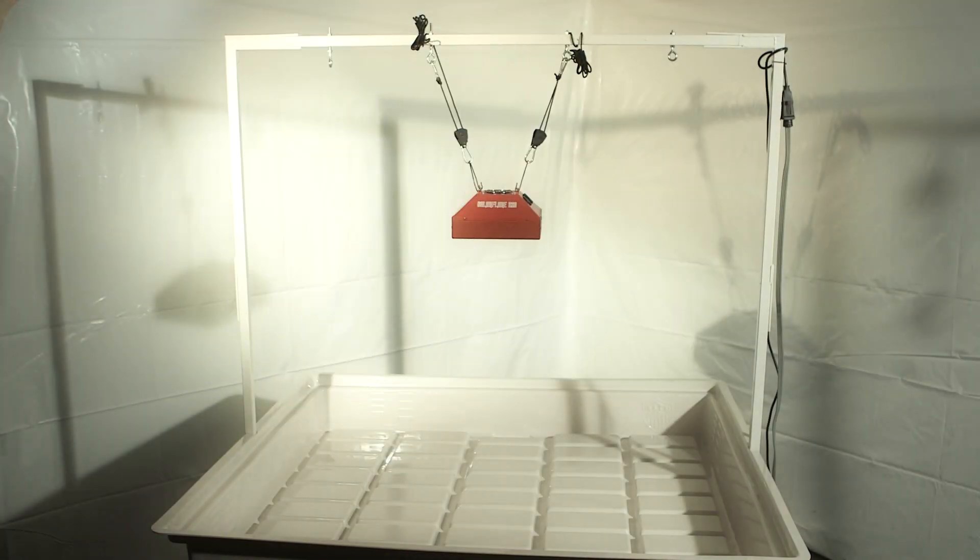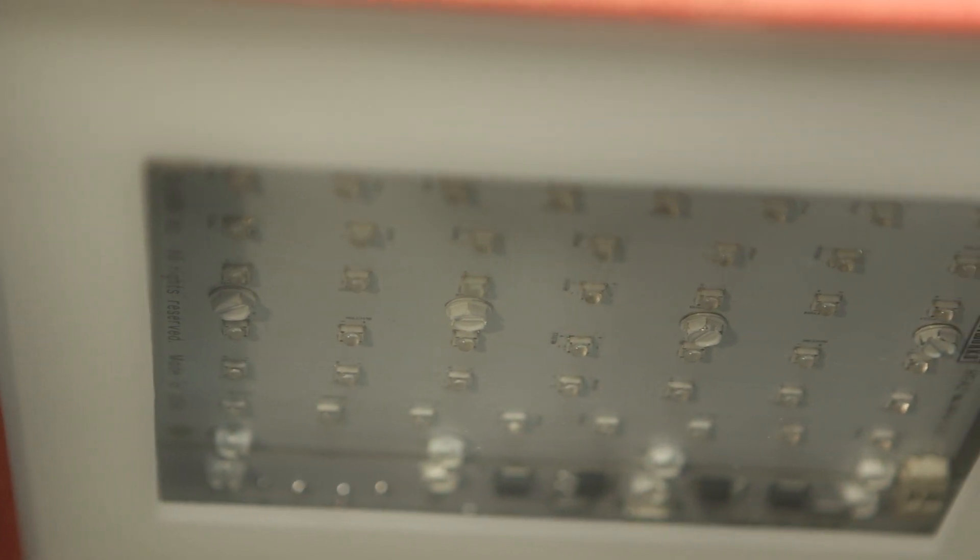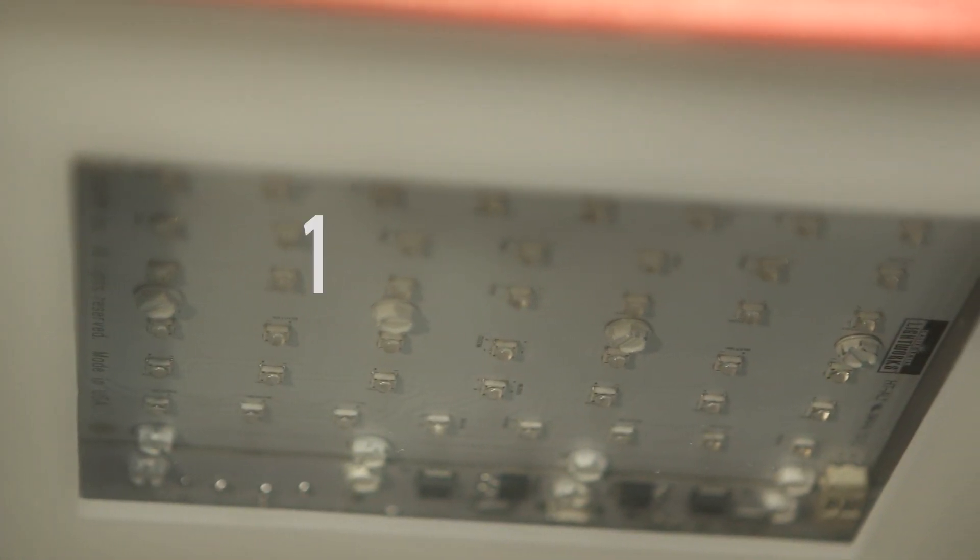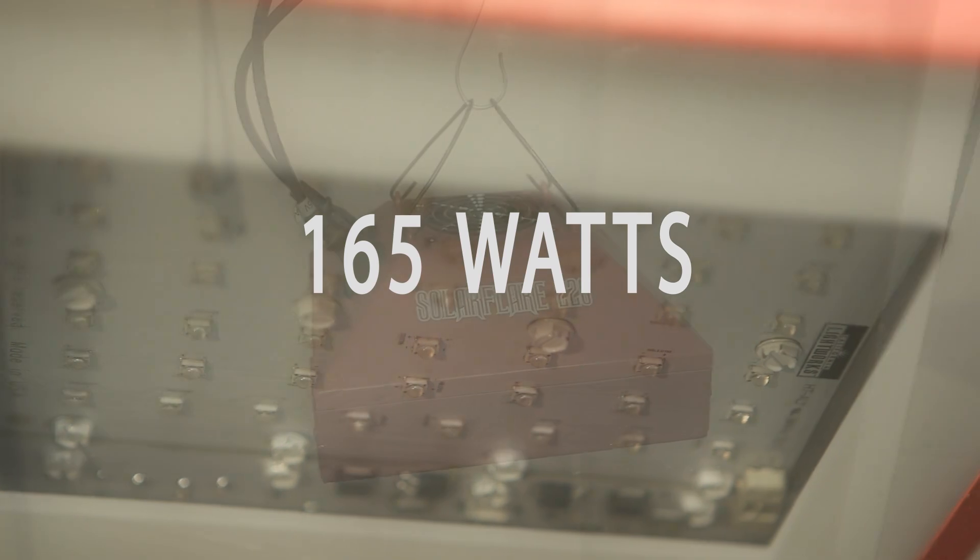Solar Flare 220. The Solar Flare 220 LED grow light is the brightest in its class. It's comprised of 44 super intensity 5 watt LED emitters for a nominal power of 220 watts. The actual power draw of the Solar Flare 220 grow light is about 165 watts.